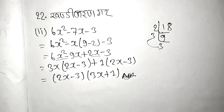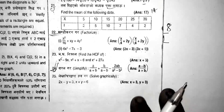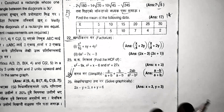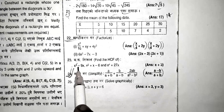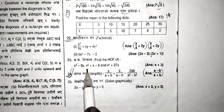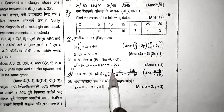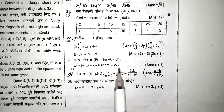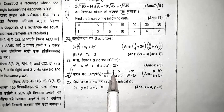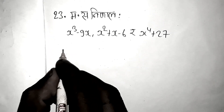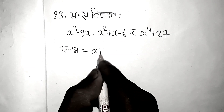Now let's solve question number 3: find the HCF of x cubed minus 9x, x squared plus x minus 6, and x to the power 4 plus 27x. Let me write the full question first and then solve step by step.